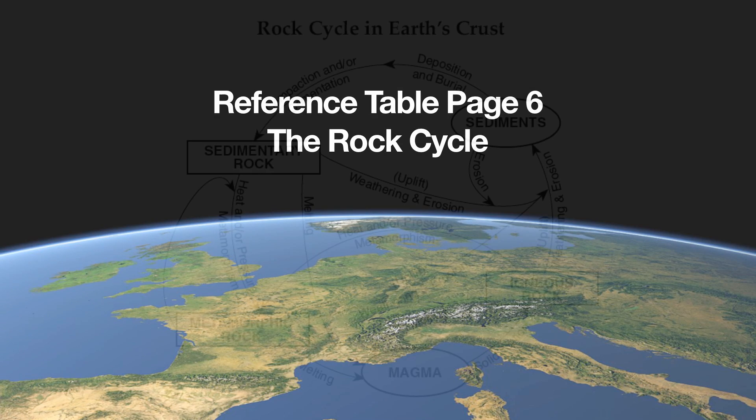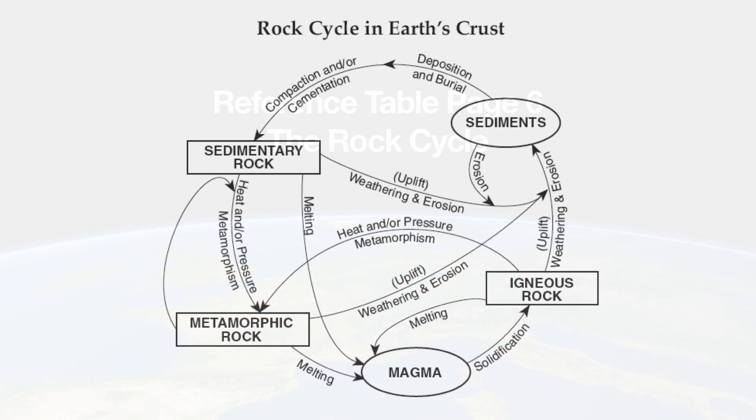A cycle is something that happens over and over and over again. So your igneous, your sedimentary, and your metamorphic rocks — the processes that make them are continuous. The processes that make each individual rock type are going to be special to that specific rock.